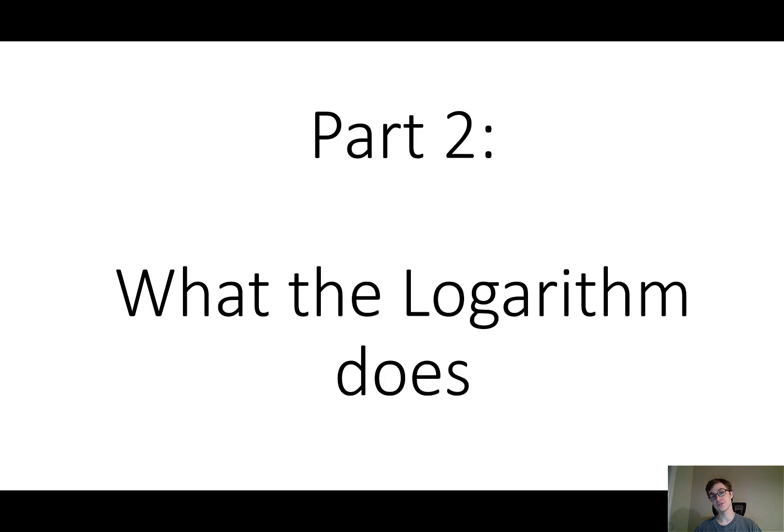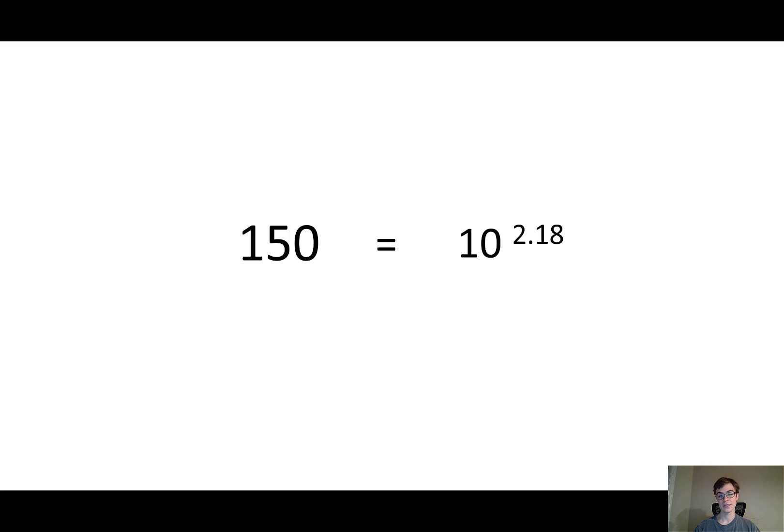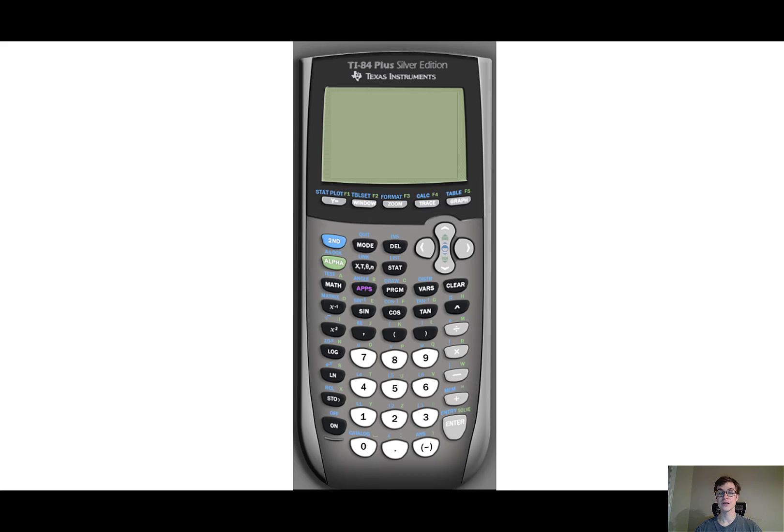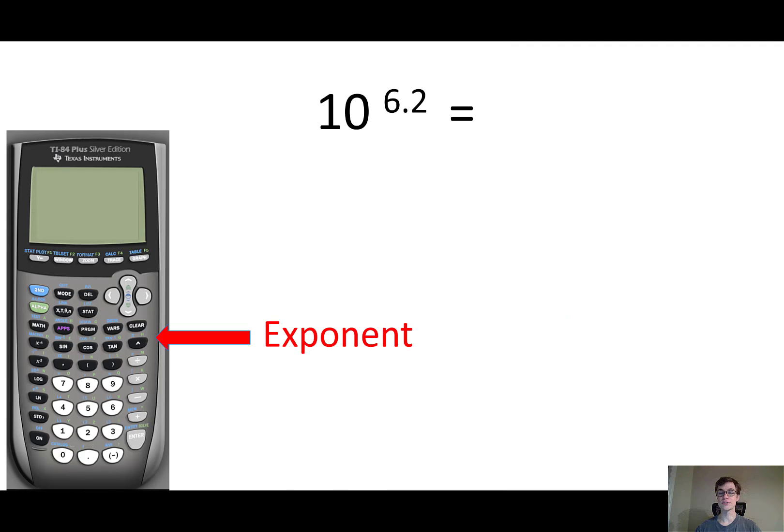Now that you know that, I can introduce you to part 2, which is what the logarithm does. Now, 150 is 10 to the 2.18th power. I just told you that. What about some other number, though, one that I didn't directly tell you? 10 to the 6.2 power. What is that? And that's probably not too hard. You could use your calculator. So what you would do is you would take 10 exponent 6.2, and I'm assuming you left your calculator at school, so you could do it like this.